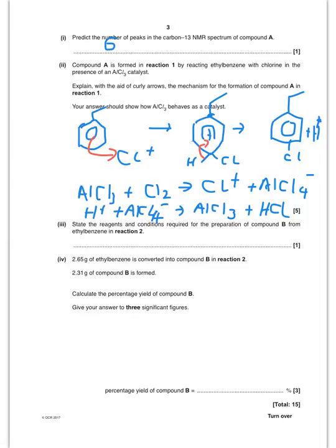We've got a nice mole question now. So let's give this one a go. It's told me I've got 2.65 grams of ethyl benzene being converted into compound B. And I form 2.31 grams of compound B. So first thing I'm going to do is work out the moles of compound B, which is going to be 2.65 divided by the molar mass of ethyl benzene, which is 106.